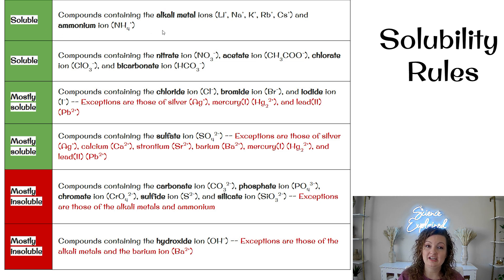So compounds containing alkali metal ions and ammonium. So any of those will definitely be dissolving and will be soluble. The next one, compounds containing nitrate ions, acetate, chloride, and bicarbonate. Now the next one, it says mostly soluble. In other words, for the most part, they will be soluble and dissolve, but there's going to be a few exceptions to these rules.